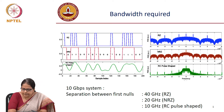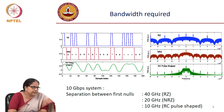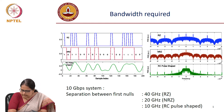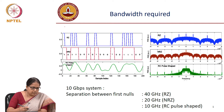Just to clarify: what you see on the left side is a time domain plot, and on the right side is a corresponding frequency domain plot. What we have tried to simulate is a 10 gigabits per second system, which means that the symbol duration...